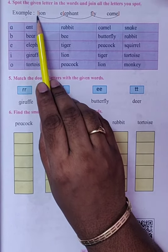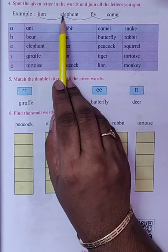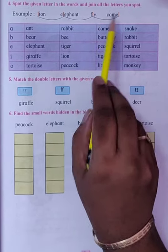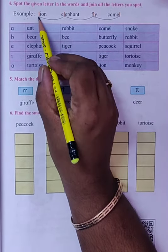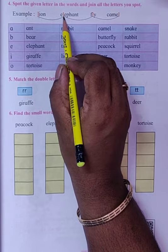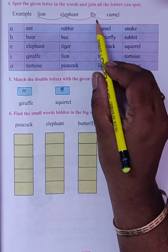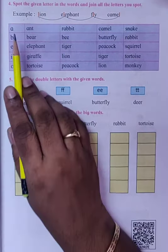The first letter of Lion is L. So we will join this L with the L in the other words. So L, Elephant L, Fly L, and Camel L. The same way.